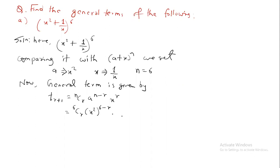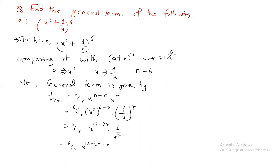So we get 6Cr · x^(2×(6-r)) · (1/x)^r, which gives 6Cr · x^(12-2r) · x^(-r), and simplifying the exponents: 6Cr · x^(12 - 3r). That is the required answer in general form.